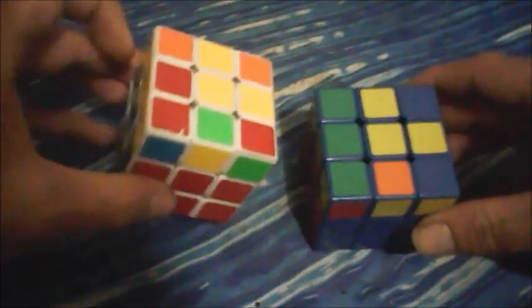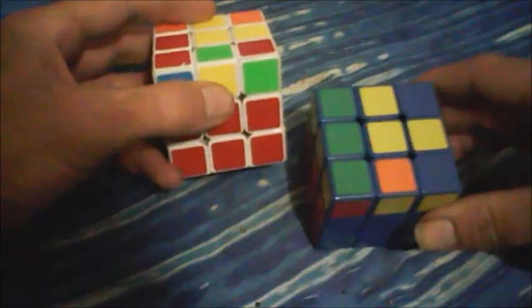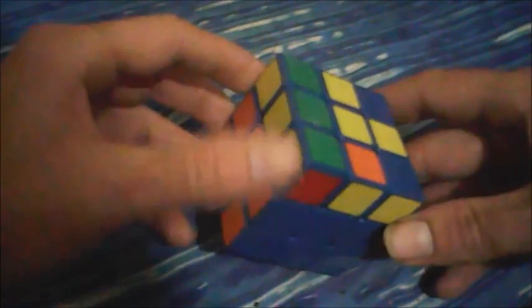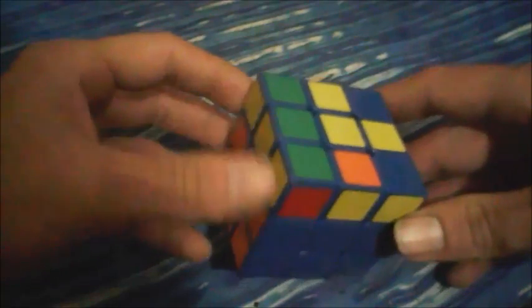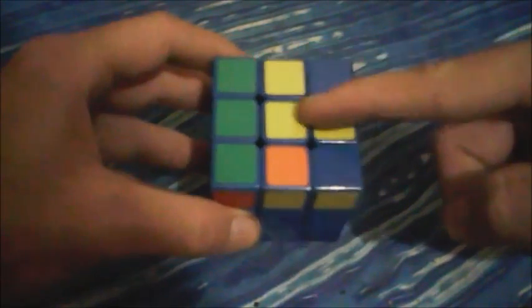So like this case, it has the 1x3 bar, but this one only has the dot. How you hold this one when performing the algorithm is the 1x3 bar on the left and the L in the back right corner like this.